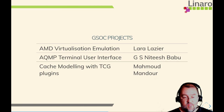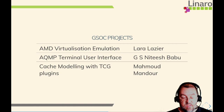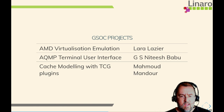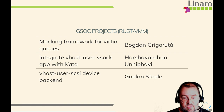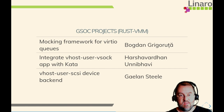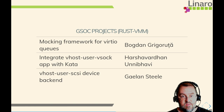As with every other year, we have been involved in Google Summer of Code. This year we had three contributors working on various parts of the code. Lara worked on improving virtualization emulation for AMD processors, which have a slightly different virtualization architecture. Nitesh worked on a terminal user interface that uses QMP to talk to QEMU to control it. And Mahmoud did some cache modeling using TCG plugins. Another bunch of students worked on RustVMM projects under the auspices of the QEMU project, including Bogdan's work on mocking frameworks for VirtIO queues, Harsha's work on integrating Vhost user VSOCK with CATA containers, and Galen's work on a Vhost user SCSI backend.